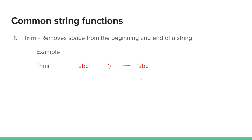The common string function TRIM removes space from the beginning and end of the string. So if you have an empty space, you can remove it from the string. You can use TRIM — for example: space, ABC, space — and the TRIM function will clean it.